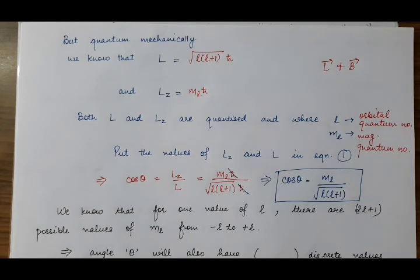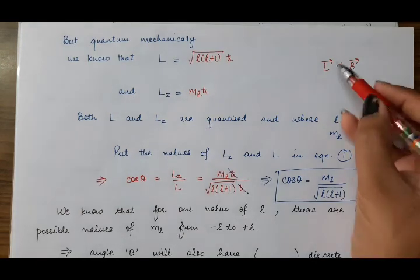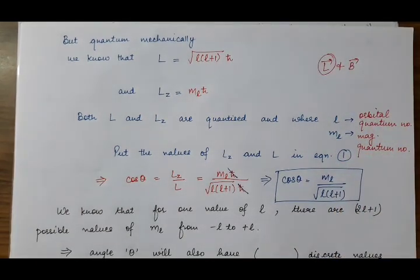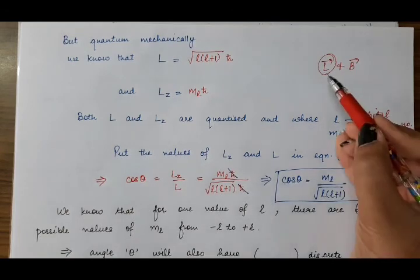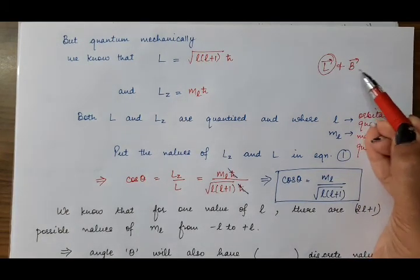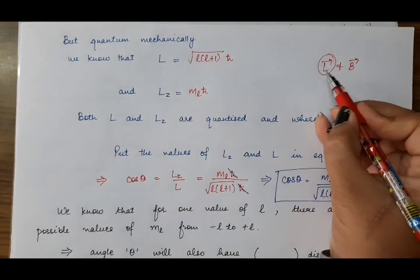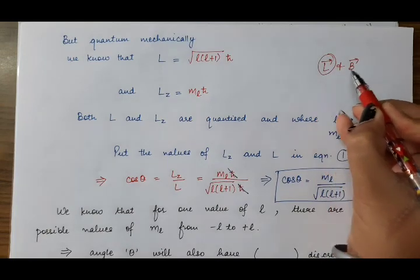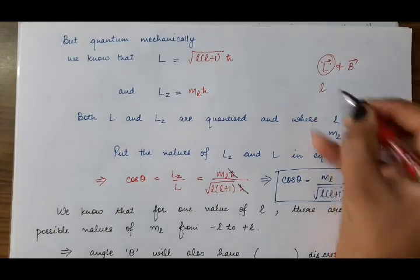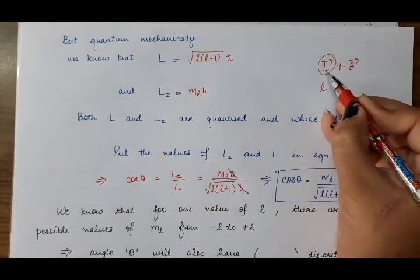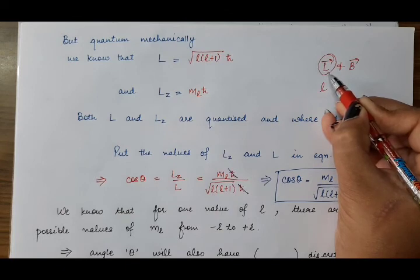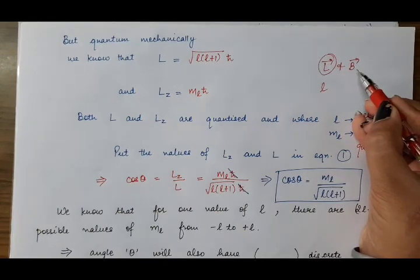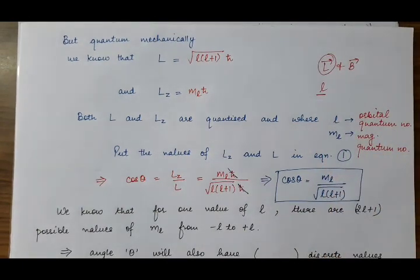Theta is the angle between L vector and B vector. Corresponding to a single value of l, the magnitude of L is constant, but there will be 2l+1 possible directions of this L vector with respect to B vector — that is, 2l+1 possible orientations. This is known as quantization of space.